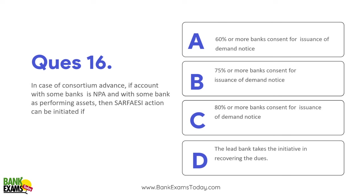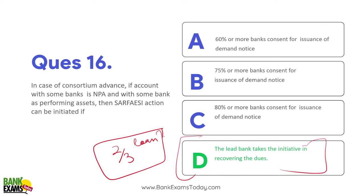In case of consortium advances, if the account with some banks is NPA and with some banks it is a performing asset, the lead bank is going to take the initiative. The lead bank is decided by two-thirds of the loan value among the banks — they will choose a lead bank, and the lead bank takes the initiative in recovering the dues. Note that the two-thirds voting rights condition is under IBC, but here under SARFAESI the lead bank decides.